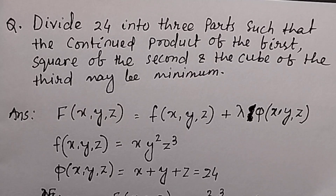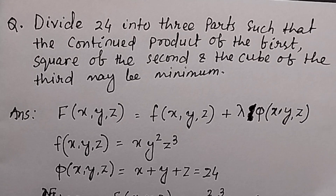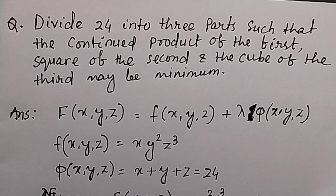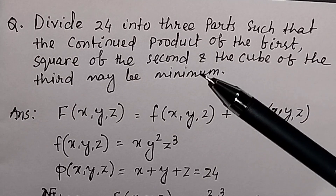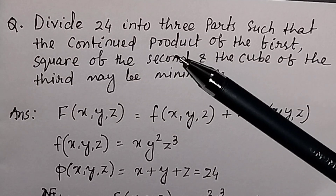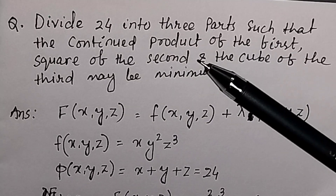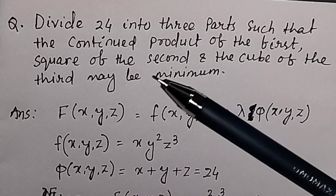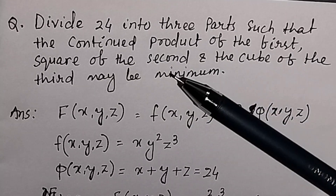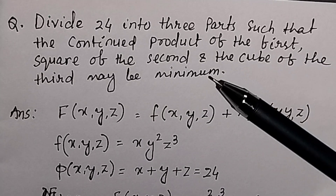We can prove this question by using constrained maximization using the Lagrange multiplier. The problem is: divide 24 into 3 parts such that the continued product of the first, the square of the second, and the cube of the third may be minimum.